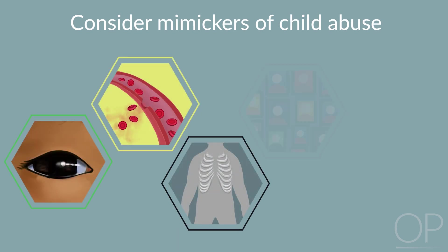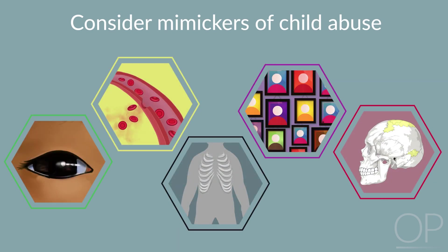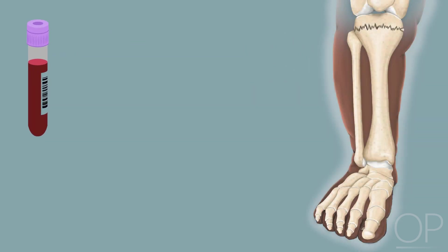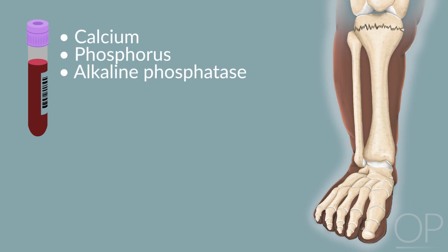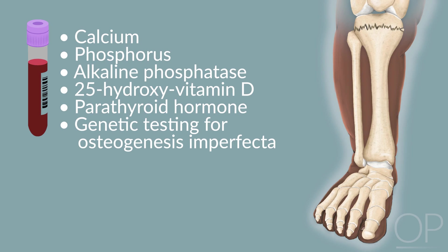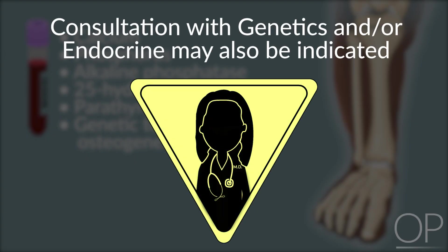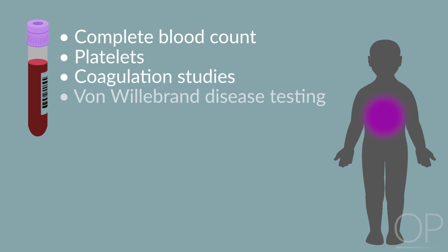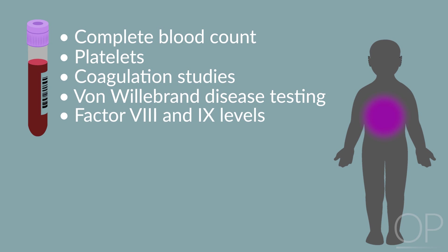In the workup of skeletal and cutaneous abuse, it is important to consider potential mimickers. A comprehensive history and physical exam, as well as lab evaluation, is critical. In a child with fractures concerning for abuse, relevant labs include evaluation of bone health: calcium, phosphorus, alkaline phosphatase, 25-hydroxyvitamin D, and parathyroid hormone, as well as consideration of genetic testing for osteogenesis imperfecta. Consultation with genetics and/or endocrine may also be indicated. For a child presenting with bruising, relevant labs include complete blood count, platelets, coagulation studies, von Willebrand disease testing, and factor VIII and IX levels. Consultation with hematology can help further guide the laboratory evaluation.